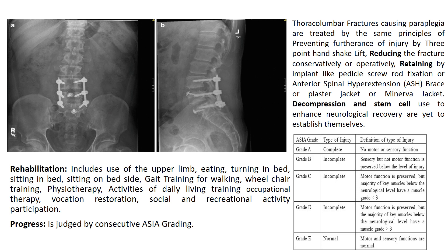Rehabilitation includes maximizing use of the upper limb for eating and daily tasks, then teaching the patient to turn in bed, sit in bed, sit with feet hanging, and get training for walking and wheelchair activity. Physiotherapy, occupational therapy, and vocational therapy are used to train the patient for activities of daily living, social activities, and recreational activities such as sports. Progress is judged by consecutive ASIA grading or other grades used to assess neurological deficit; an ASIA grade chart is provided in the slide.